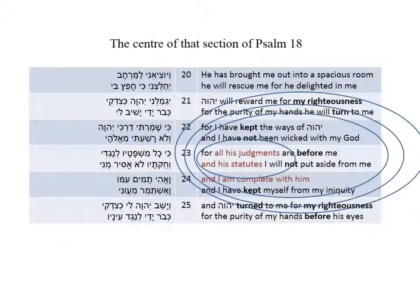These concentric circles are formed by joining the words that recur in reverse sequence: my righteousness, turn, kept, not — and they're reversed. These all surround 'all his judgments and his statutes,' and three of them surround the confident hope that I am complete in him. Note also the last recurring word, 'before,' a focus of the passage. There is a face-to-face relationship portrayed here — his judgments and his statutes are before me, and the purity of my hands is before his eyes.